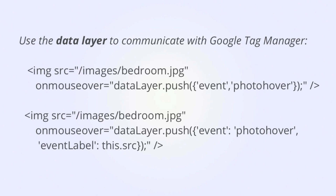Instead, we're going to use the data layer object to communicate with Google Tag Manager. All we need to push into the data layer is an event. Now, again, this event is not the Google Analytics event — this is going to serve as the trigger for the Google Analytics event tag in Google Tag Manager, the same way that GTM link click served as the trigger. We are also going to push another piece of data into the data layer. We can distinguish between hovers over the different images by dynamically passing the image source into the data layer for use as the label parameter for the Google Analytics event tag.